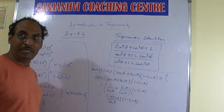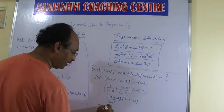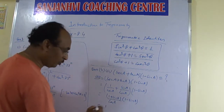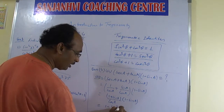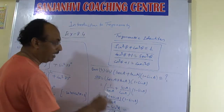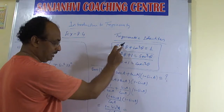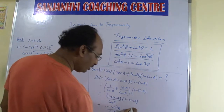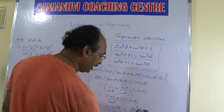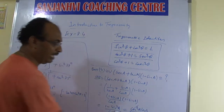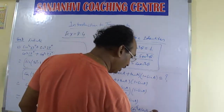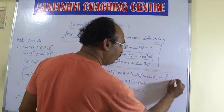So a plus b into a minus b is equal to a squared minus b squared. So here it will be one square minus sin square a, by cos a. Then it will be equal to one minus sin square a — which is cos square a — by cos a. So cos square a by cos a: one cos a will get cancelled. So we will be getting cos a. So our answer will be cos a.